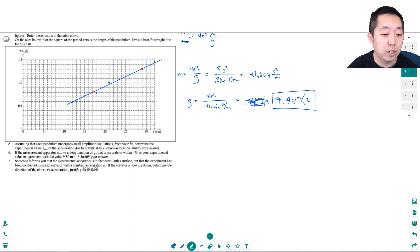If the measurement apparatus allows determination of g with accuracy within 4%, is your experimental value in agreement with 9.8 meters per second squared? Let's find the percent error: (9.47 - 9.8) / 9.8. That's -3.3%. Yeah, it's within 4% of the actual value, so it matches. If I had a number bigger than 4%, I'd be further away than what I was measuring, meaning either gravity is wrong, my apparatus wasn't really within 4%, or I recorded the data wrong.